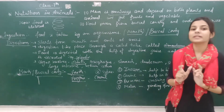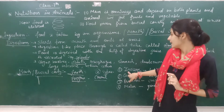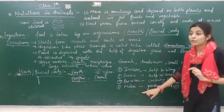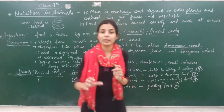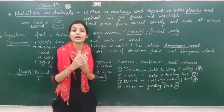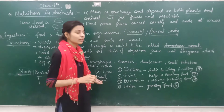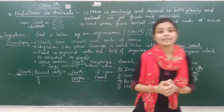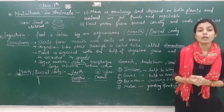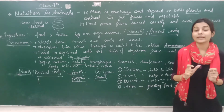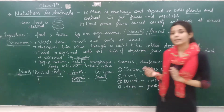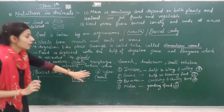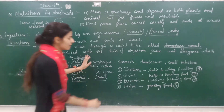Human beings have four types of teeth: incisors, canine, premolar, and molar. Teeth have a hard and shiny covering which is called enamel. Baby teeth have milk teeth, which at a particular age are replaced with permanent teeth.